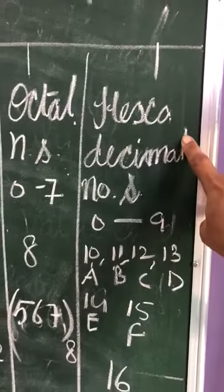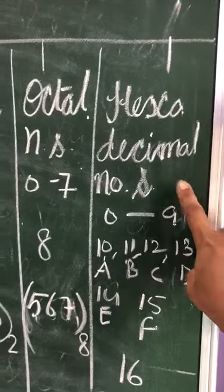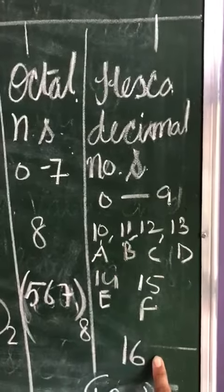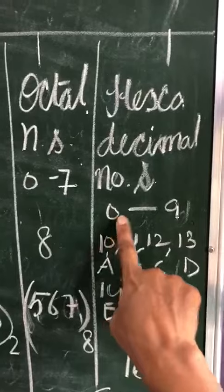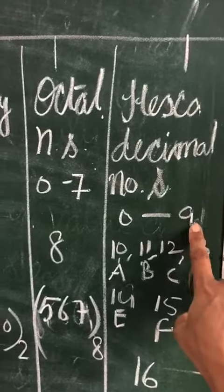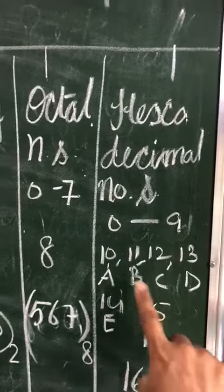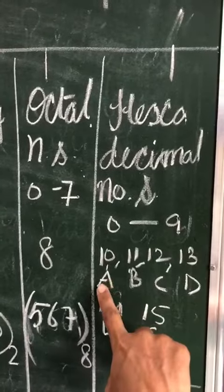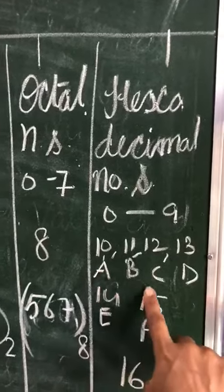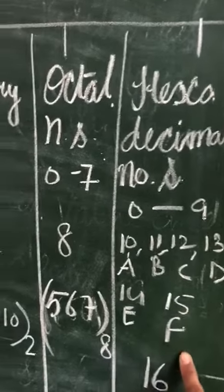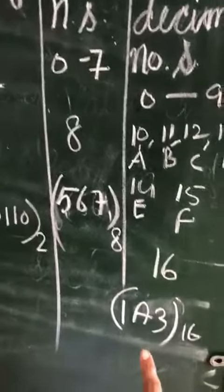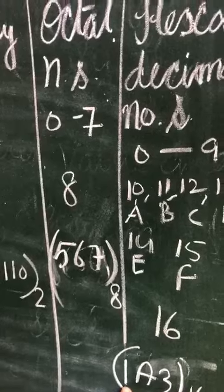The last one is the hexadecimal number system. It has 16 as a base. This includes digits 0 to 9, and after 9, we have 10, 11, 12, 13, 14, and 15. These numbers are denoted with alphabetical letters: A, B, C, D, E, and F. Here is an example of a hexadecimal number.